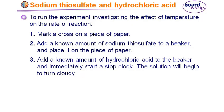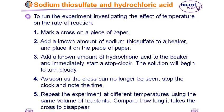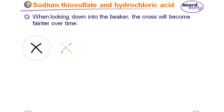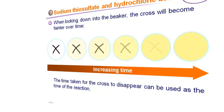If you are studying the effect of temperature, you must control all other variables. As soon as the cross can no longer be seen, stop the clock and note the time. Repeat this experiment at different temperatures using the same volumes of reactants and compare how long it takes for the cross to disappear. This is a common exam question — how to plan an investigation to check the effect of temperature, surface area, or concentration. The time taken for the cross to disappear is used as the measure of the rate of reaction.